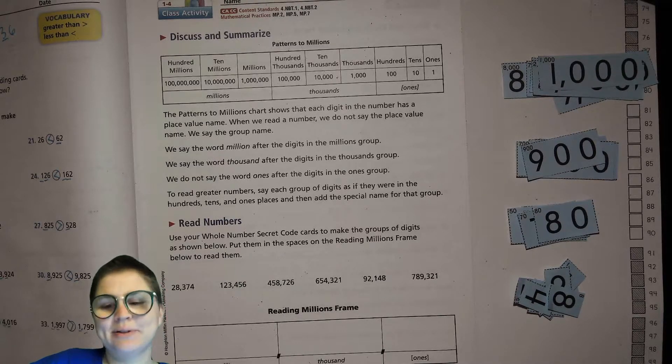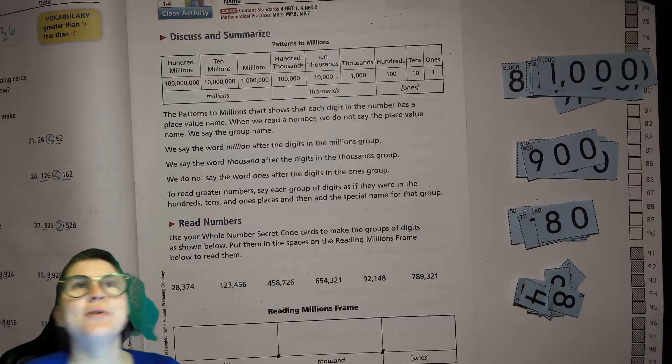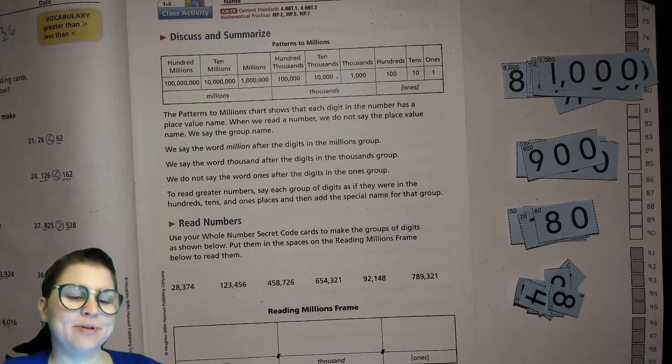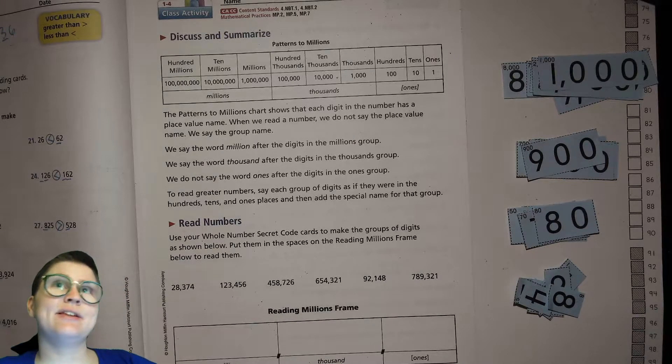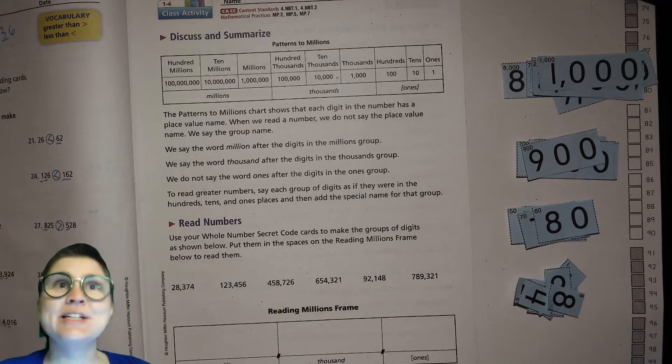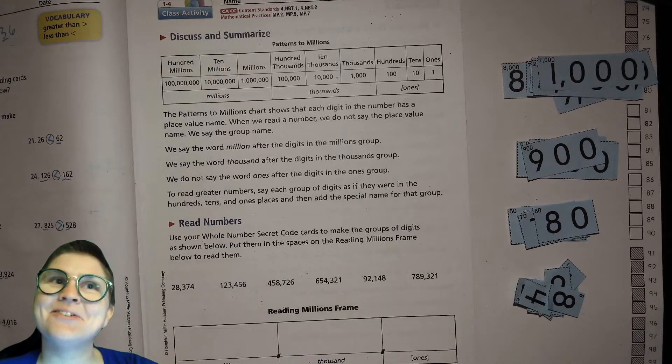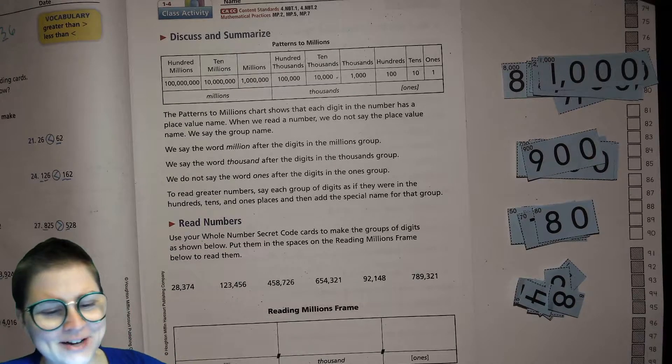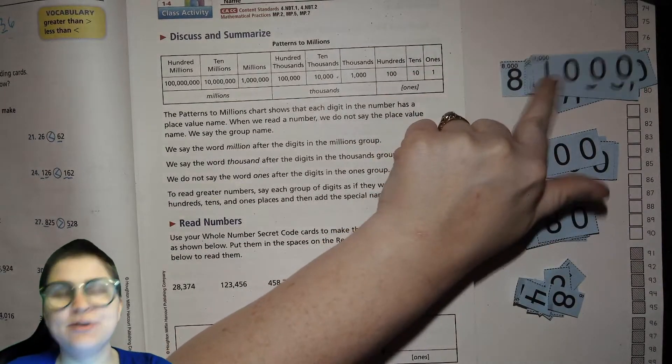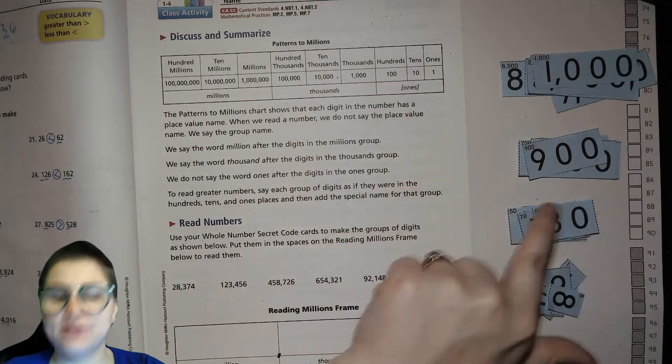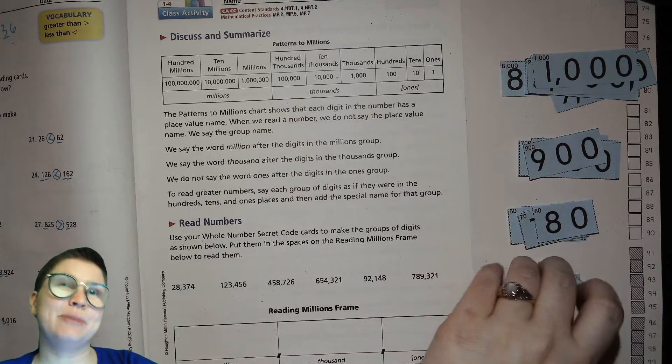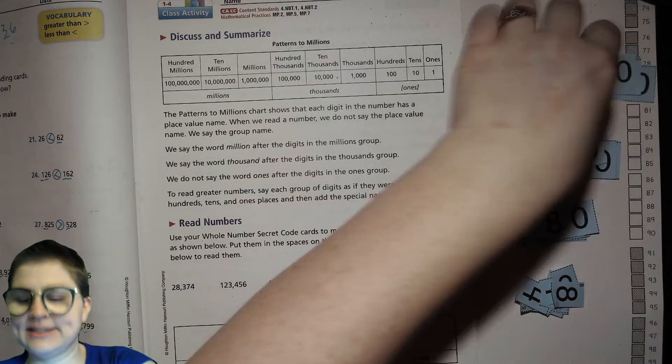Hello everybody, welcome back. This is our fourth grade unit one, fourth lesson, and we're still talking about place value. Now we're focusing on how we read these bigger numbers and we're working into the millions. If you haven't already, can you go ahead and grab your secret code cards that we cut out earlier this week? If you can't find them, it's not a huge deal, but it will be helpful. Go ahead, get that organized and then hit play when you're ready.